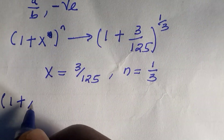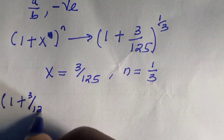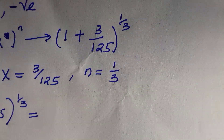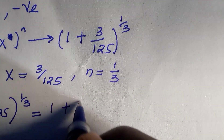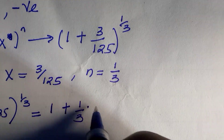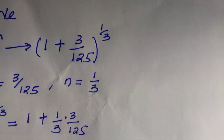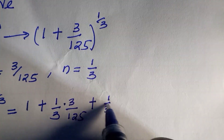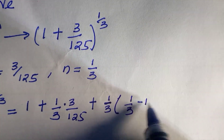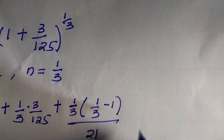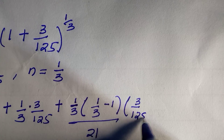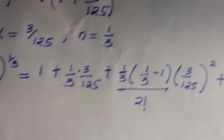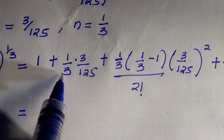Substituting into the formula, (1 + 3/125)^(1/3) equals 1 + (1/3)(3/125) + (1/3)(1/3 − 1)/2! · (3/125)². I will stop at this third term and expand it.